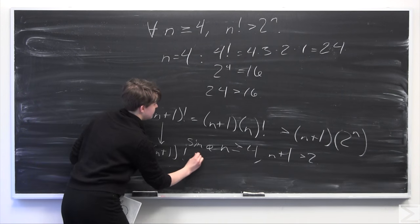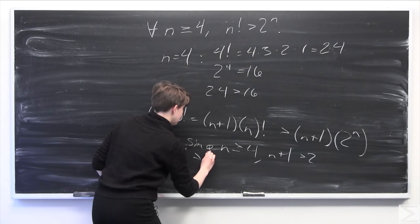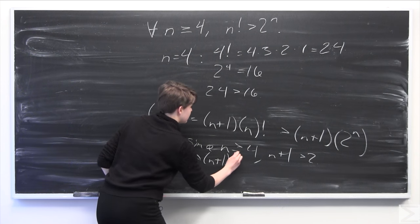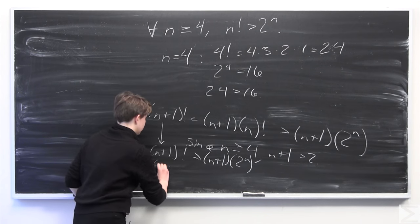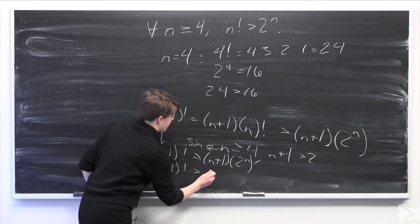n plus 1 times 2 to the n. So, we know that n plus 1 factorial is also greater than 2 times, because n plus 1 is always greater than 2, n plus 1 times, or 2 times 2 to the n.